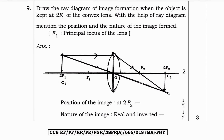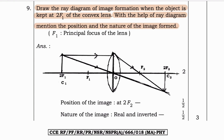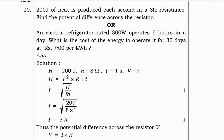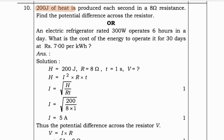First question: Draw the ray diagram of image formation when the object is kept at 2f1 of the convex lens. With the help of the ray diagram, mention the position and the nature of the image formed. F1 is the principal focus of the lens. Here the diagram is given, and the position of the image is at 2f2. The nature of the image is real and inverted.